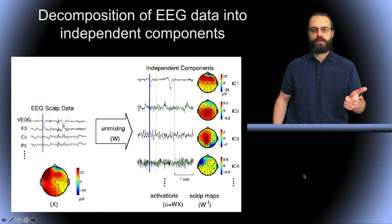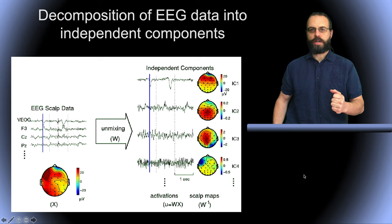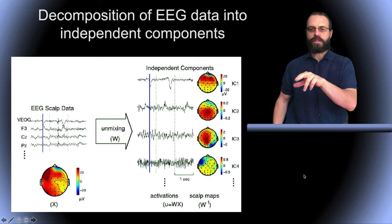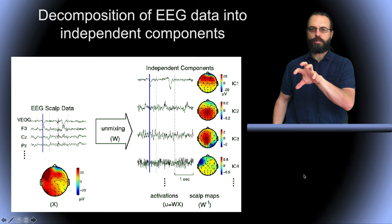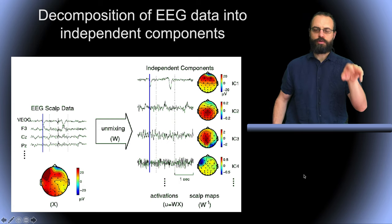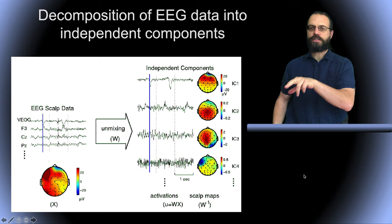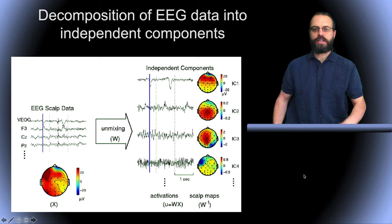On the left here you have EEG data and you apply the unmixing matrix, you apply the ICA, and then you get the decomposition which is the time course of components times the scalp topography of the components. The original data is equal to the sum of these activations times the scalp topographies.